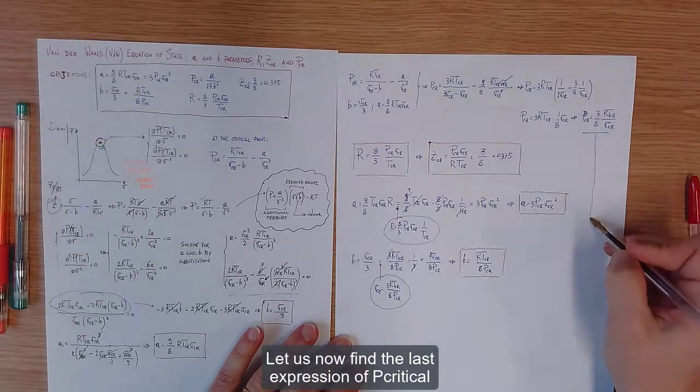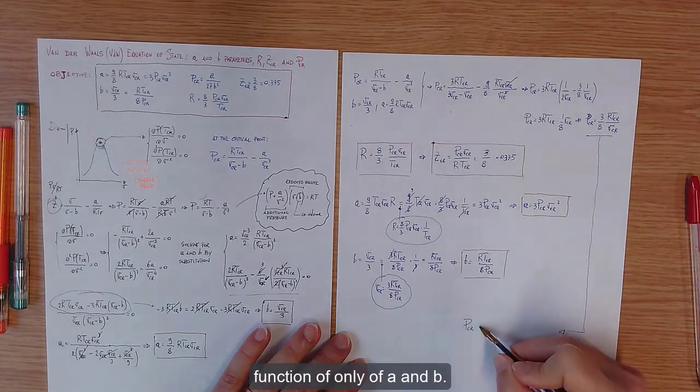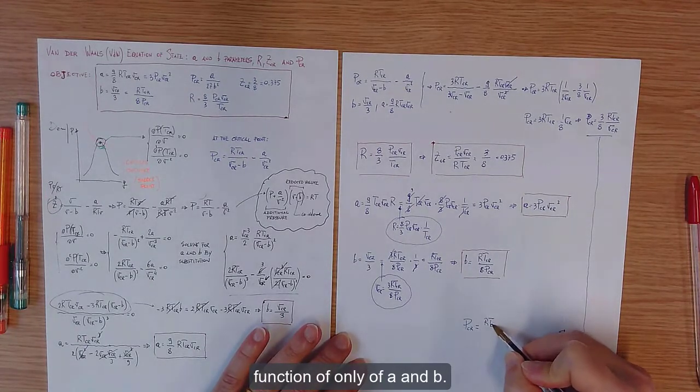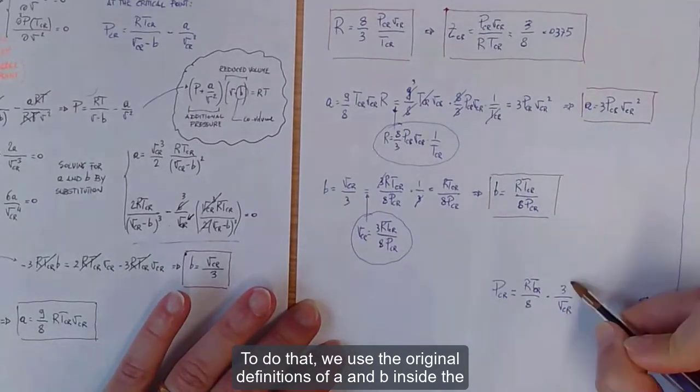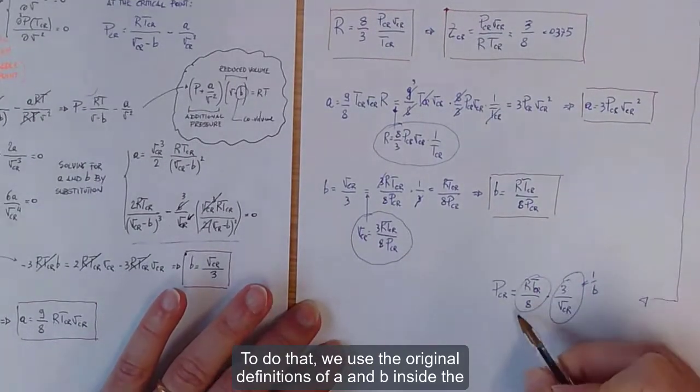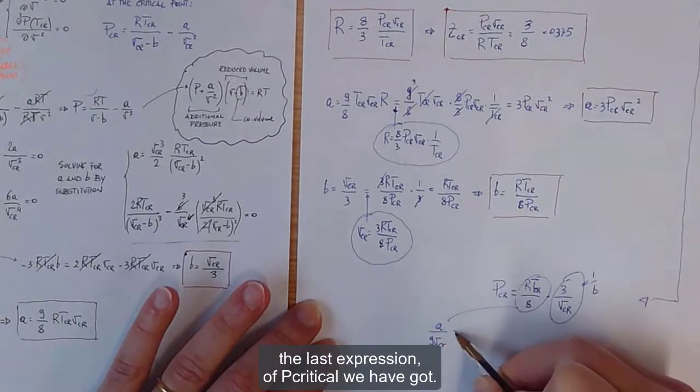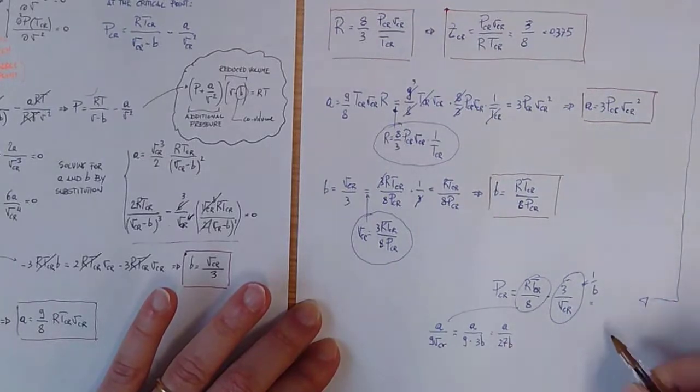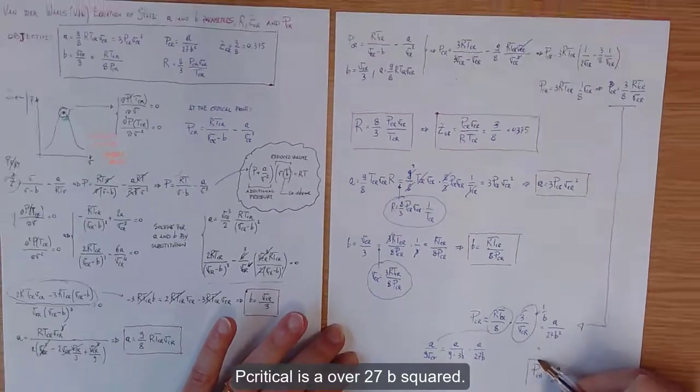Let us now find the last expression of p critical function only of a and b. To do that, we use the original definitions of a and b inside the last expression of p critical we have got. The critical pressure is a over 27b squared.